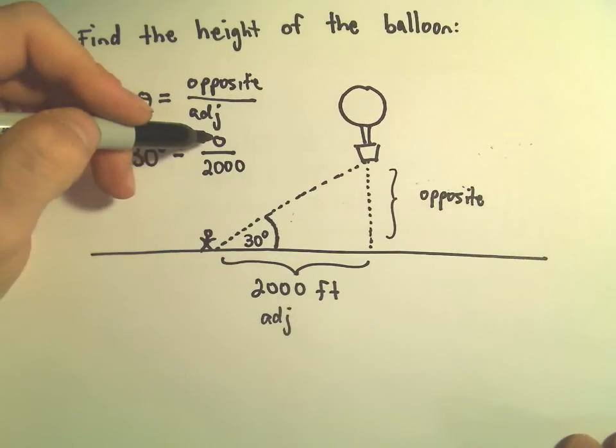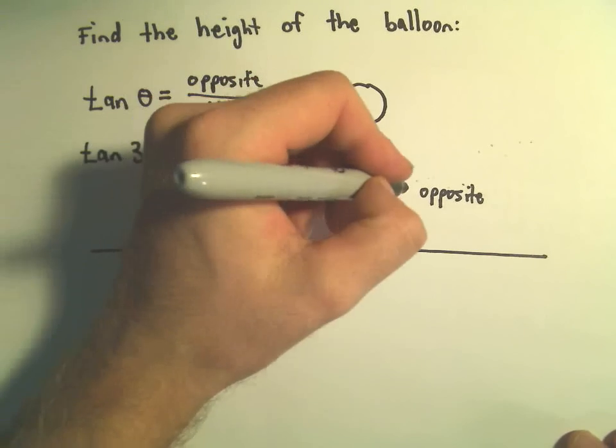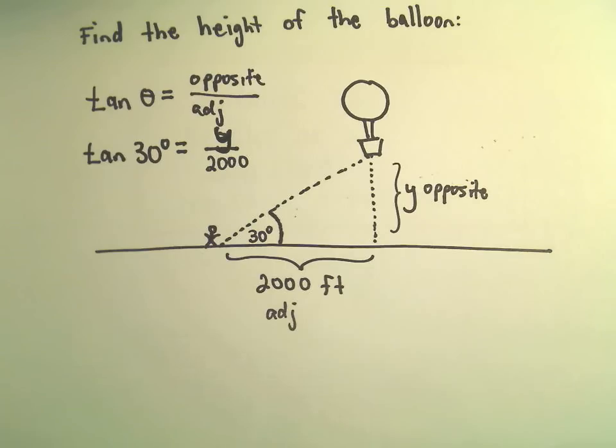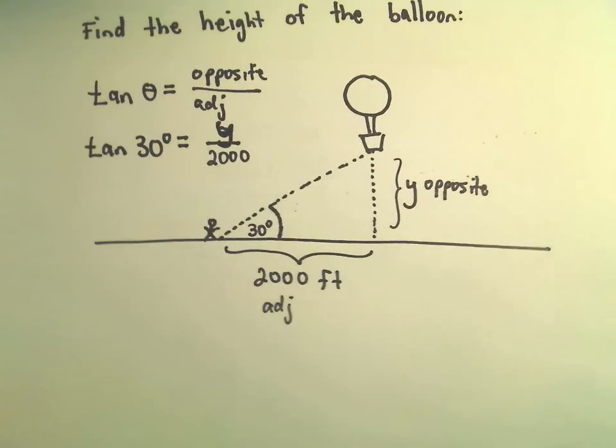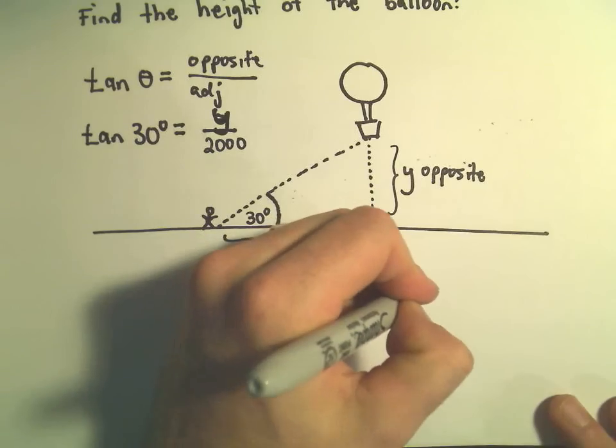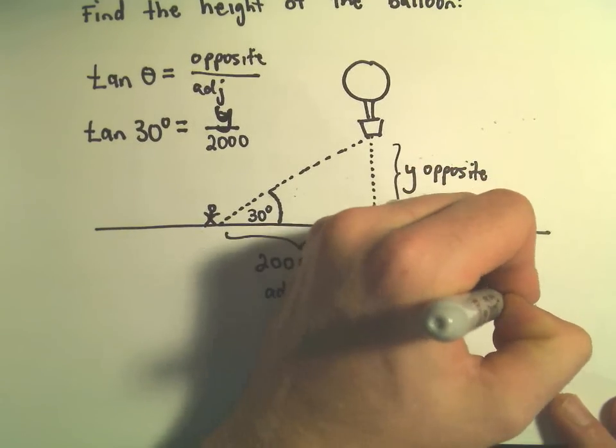Actually, let's not use O for opposite because it looks like a zero. So let's just call this height Y, and everything will be less confusing. So we have tangent of 30 degrees equals Y over 2,000.